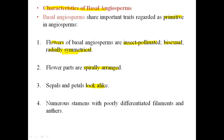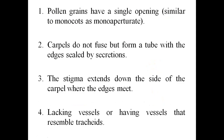Basal angiosperms have numerous stamens and carpels. In monocots and dicots, stamens are well differentiated into anther and filament, but in basal angiosperms they are not well differentiated into filaments and anthers. The pollen grains have a single opening — they are monoaperturate — a character similar to monocots.